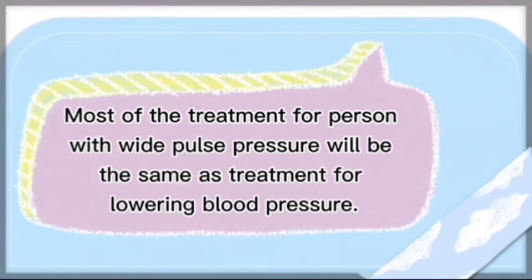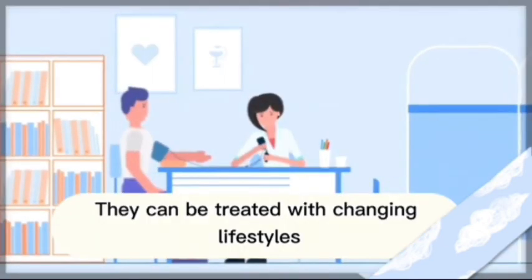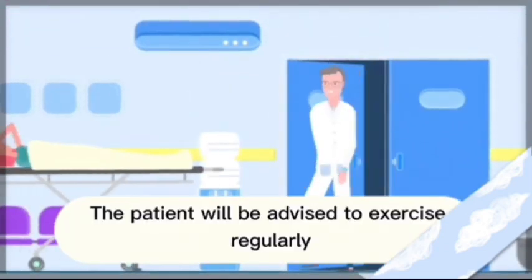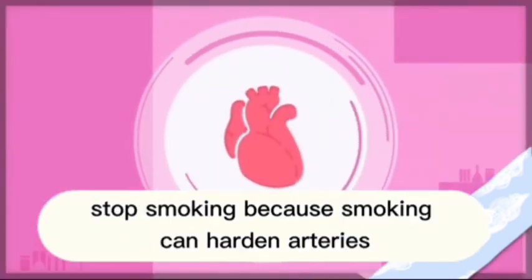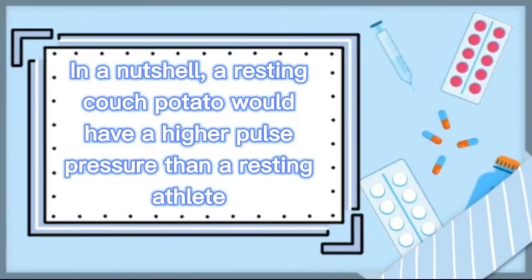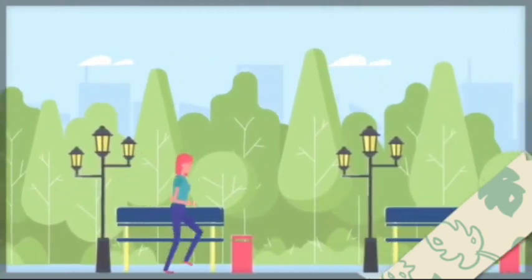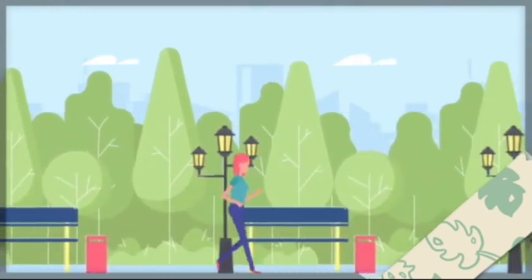How to treat high pulse pressure: most treatments will be the same as treatments for lowering blood pressure. Firstly, lifestyle changes — if the person is overweight, they are advised to lose weight to lower blood pressure. The patient will be advised to exercise regularly. If the patient is a smoker, they need to stop smoking, because smoking can harden arteries and therefore increase pulse pressure. In conclusion, a resting couch potato would have a higher pulse pressure than a resting athlete. For future recommendations, there are many ways to keep pulse pressure normal. Most importantly, exercise regularly. Thank you for listening.